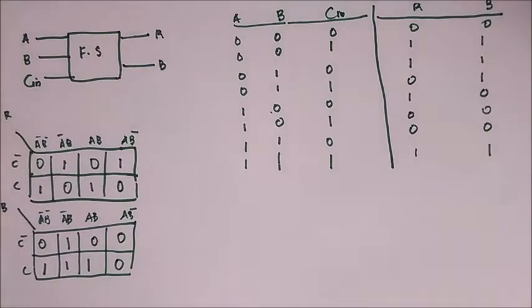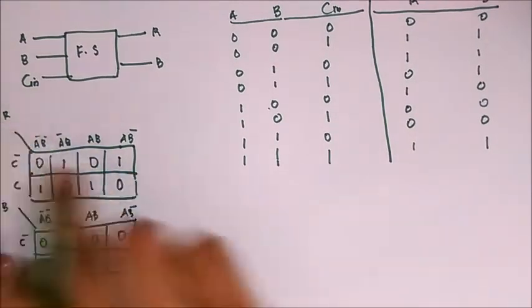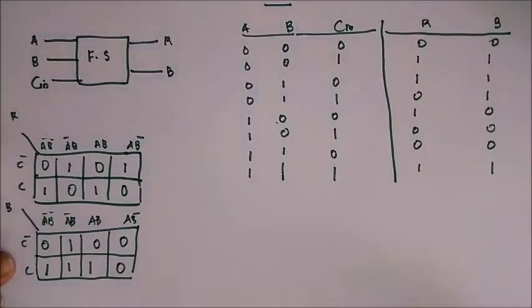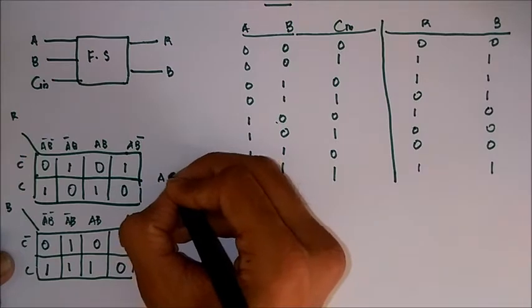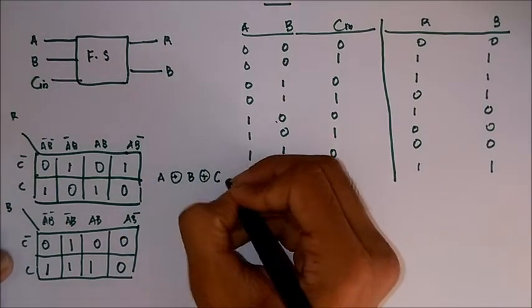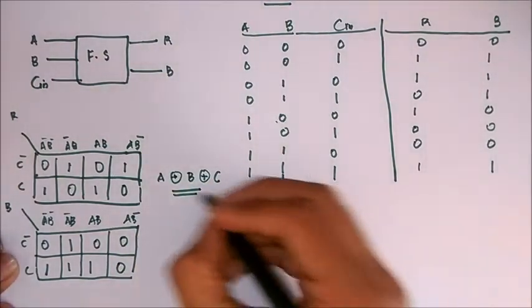And as you can see, the K-map for the result is in checkerboard configuration. We know that in case of checkerboard configuration, the result is A XOR B XOR C. Otherwise you can write down each cell equivalent.